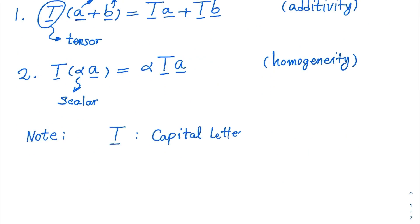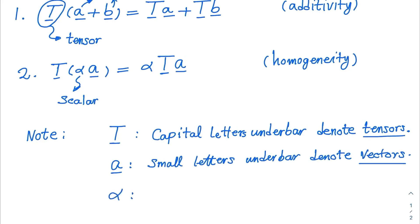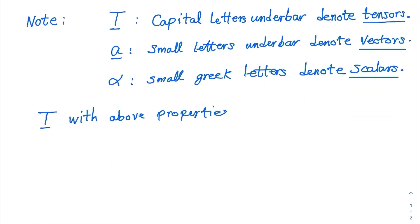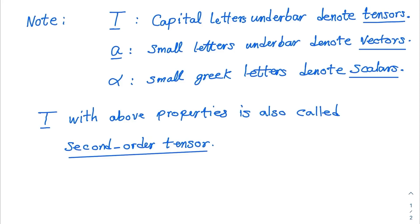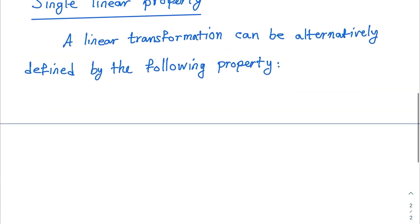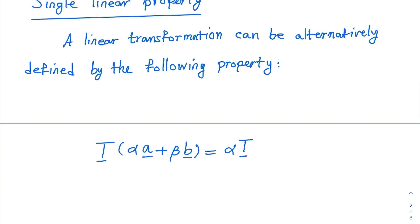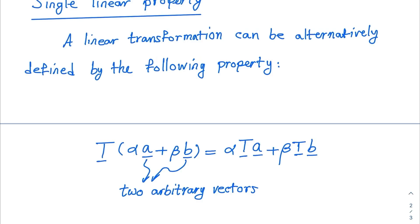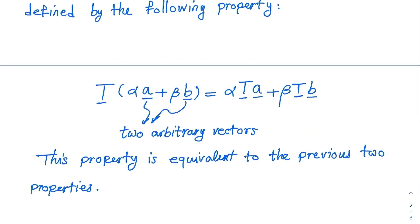Note that capital letters with a bar denote tensors, small letters with a bar denote vectors, and small Greek letters denote scalars. T with the above properties is also called a second-order tensor. A linear transformation can be alternatively defined by the following single property: transformation of the sum of two scaled vectors alpha A and beta B is equal to alpha times the transformation of A plus beta times the transformation of B. This property is equivalent to the previous two properties.